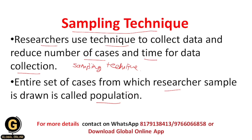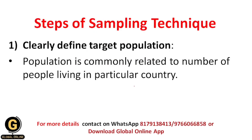Researchers neither have the time nor the resources to analyze the entire population, so they apply sampling technique to reduce the number of cases. The first step of sampling technique is to clearly define the target population. The first stage in the sampling process is to clearly define the target population, which is commonly related to the number of people living in a particular country.